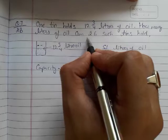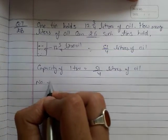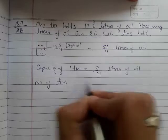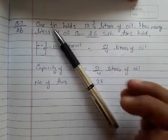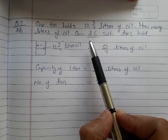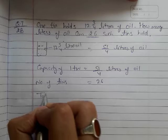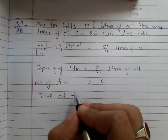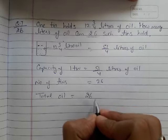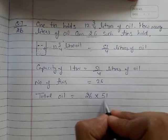Now number of tins are 26 and you have to find how many liters of oil can come in such 26 tins. So total oil is equal to number of tins, that is 26, into capacity of one tin, that is 51 upon 4.